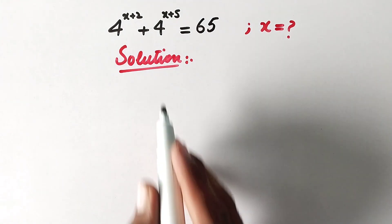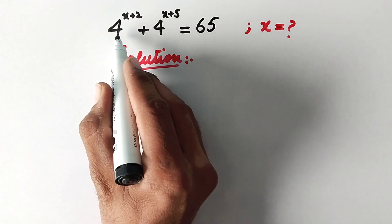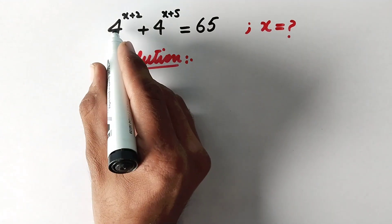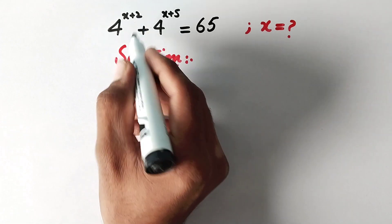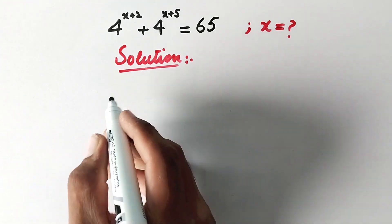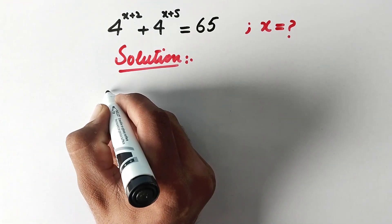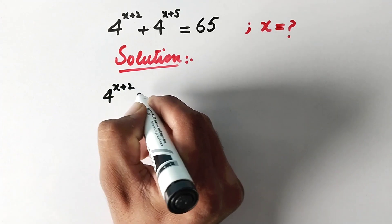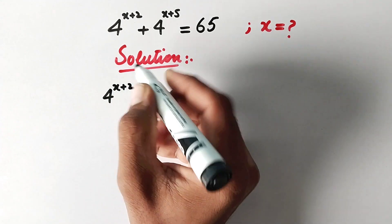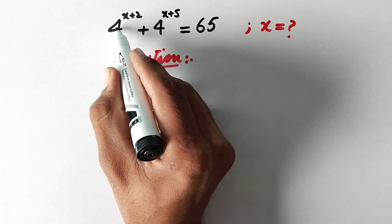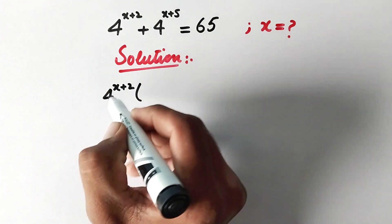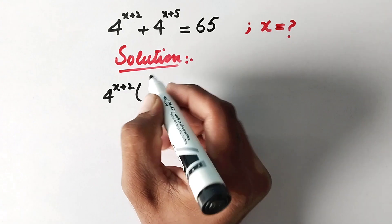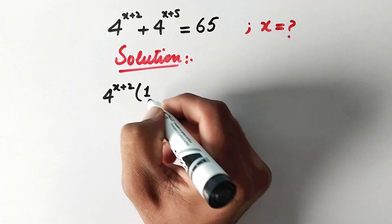In the first step, from this equation we can take 4 raised to power x plus 2 as a common factor. So we write 4 raised to power x plus 2 as common. Then 4 raised to power x plus 2 divided by 4 raised to power x plus 2 is equal to 1.